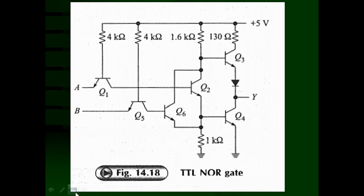The question is whether the totem pole satisfies the NOR gate truth table. For a NOR gate with inputs A and B and output Y: if both inputs are low, output is high; if any one input is high, output is low. We need to verify this with the circuit. Let us check each condition.